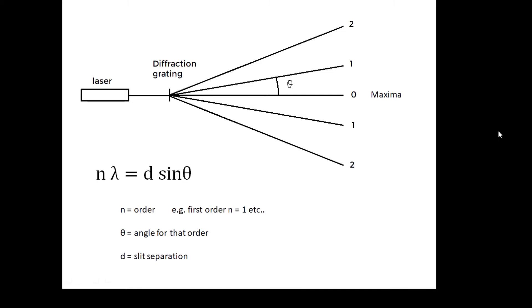I guarantee you'll have to use: n λ = d sin θ. n is called the order – the zero order is the straight-through position, the first order is the first maximum, then second order, third order, etc. θ is the angle for that particular order, and d is the slit separation, which I've just shown you how to work out.